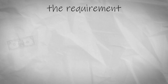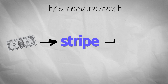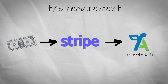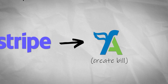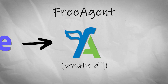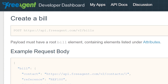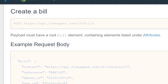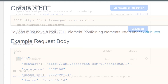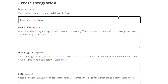Whenever I receive a payment from Stripe, I want to automate bill creation in my bookkeeping software, so I decided to create my own integration. The bookkeeping software FreeAgent has a nice JSON REST API to create bills and uses OAuth2 authentication.